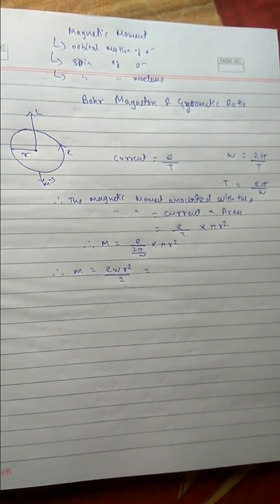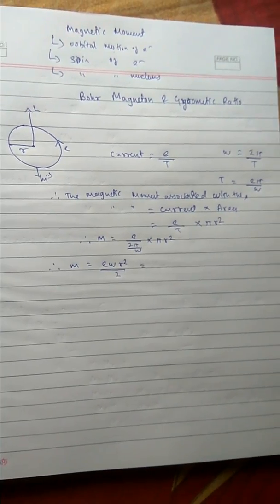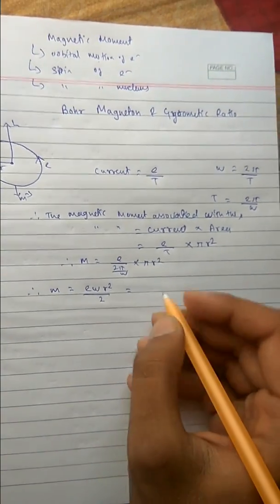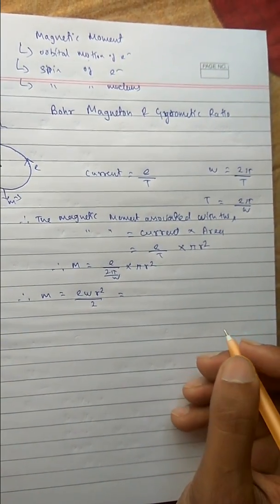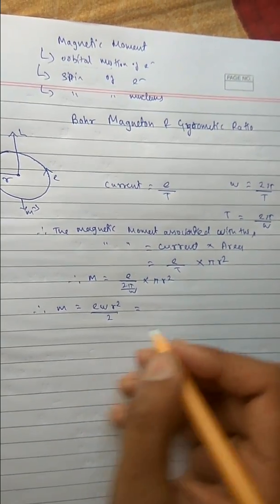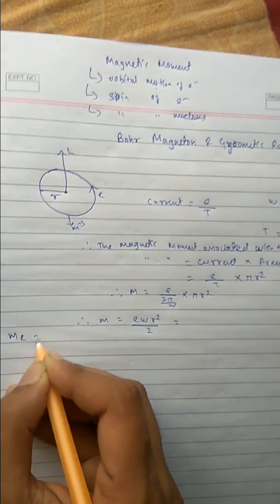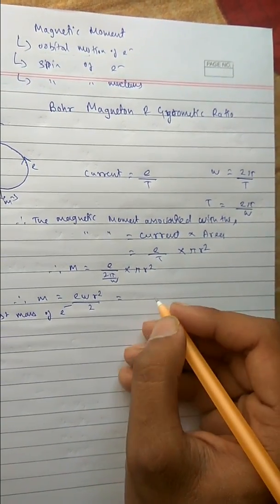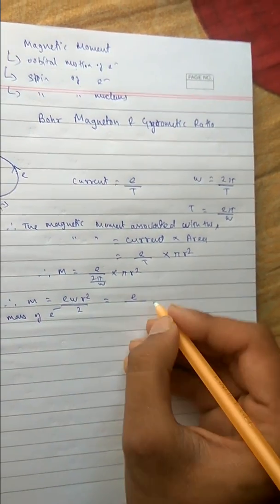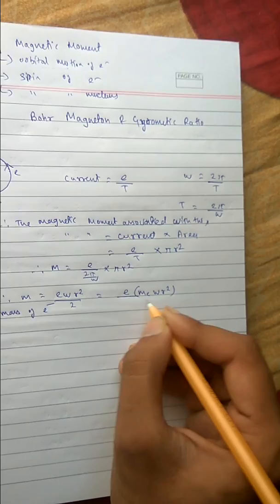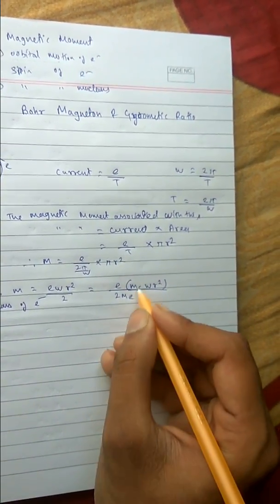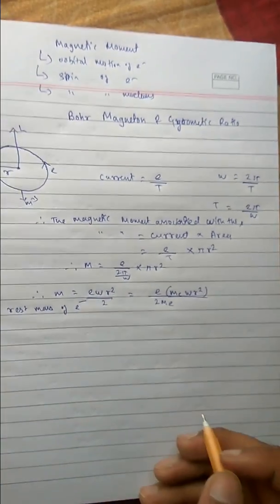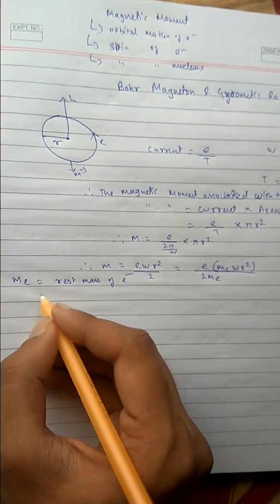Now we introduce the concept of rest mass of an electron, m_e, which is the mass when the electron's speed relative to an observer is zero. We multiply both the numerator and denominator by m_e. Our expression for magnetic moment becomes: m equals (e · m_e · omega · r²) divided by 2·m_e.